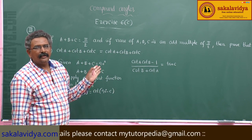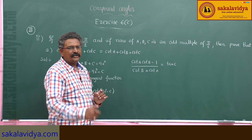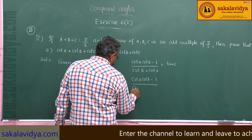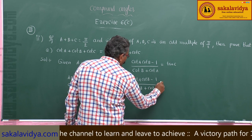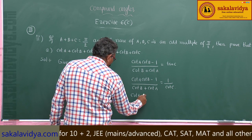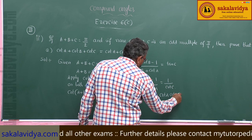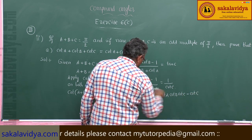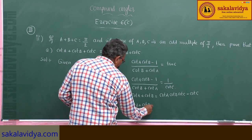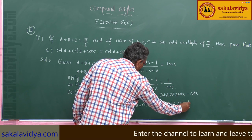Looking at the left hand side, all terms are in terms of cotangent function, so we need to change the right hand side to cot C as well. So cot A cot B minus 1 divided by cot B plus cot A equals 1 divided by cot C. Cross multiplying and simplifying: cot A plus cot B equals cot A cot C plus cot B cot C minus cot C. Bringing cot C terms to one side, therefore cot A plus cot B plus cot C equals cot A cot B cot C. Hence it is proved.